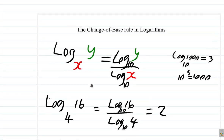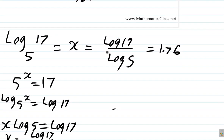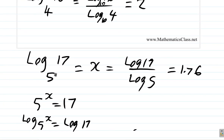Remember, the change of base rule says: when you have a log of a number with a certain base that your calculator doesn't know, just find the log of the number over the log of the base using a base your calculator does know. Here, log base 5 of 17 became log 17 over log 5, where the new base is 10, giving us 1.76.